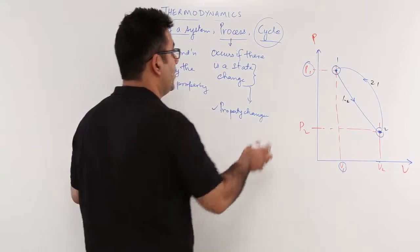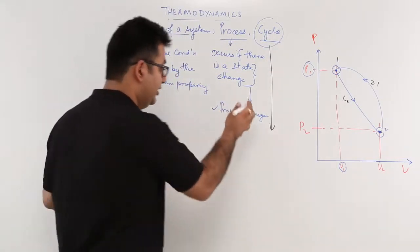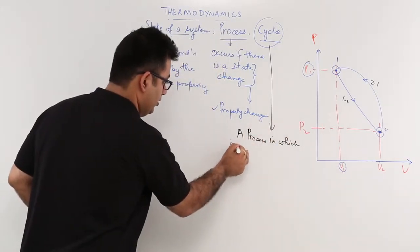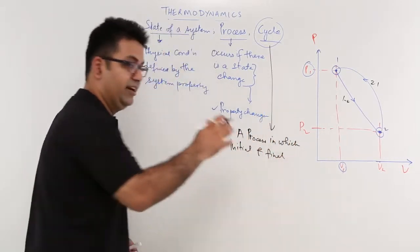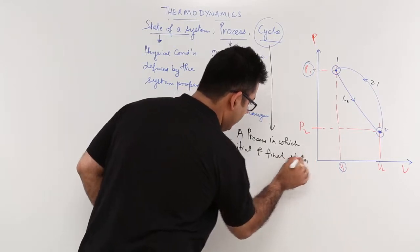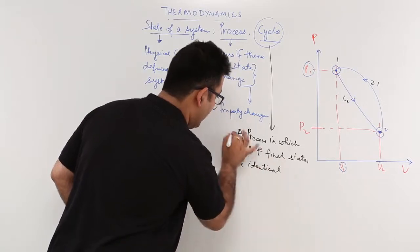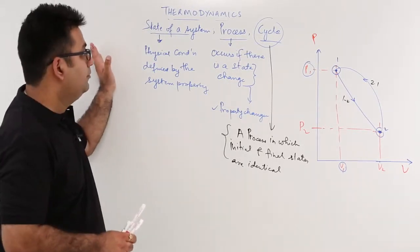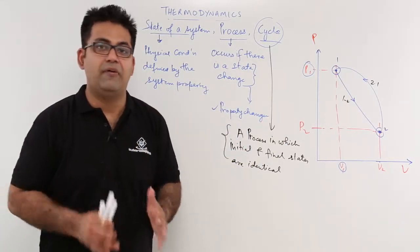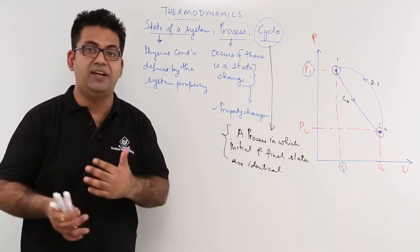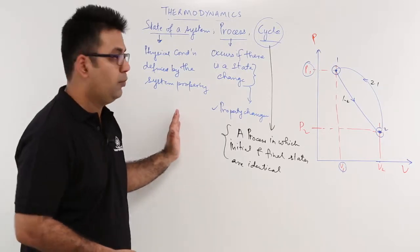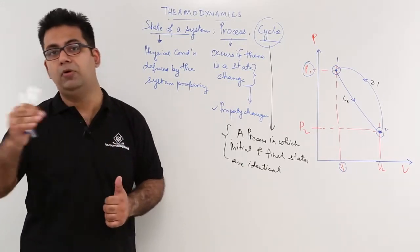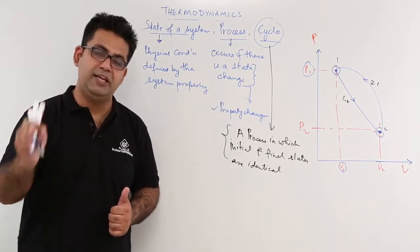So in a process where the initial and the final states are identical, that is called a cycle. A cycle is basically a process — a process in which the initial and final states are identical. These are three very important topics to understand: state, process, and cycle. Before that, you should be very comfortable with the understanding of the property of a system. In the next video, we talk about two kinds of functions: path functions and point functions.